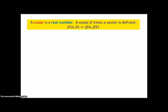A scalar is a real number. We have to give it a different name when we're doing vectors, just because that's the way the English language is. A scalar beta times a vector is defined as beta times the vector (A, B) equals (beta A, beta B). So you're just multiplying the components.